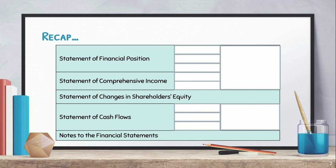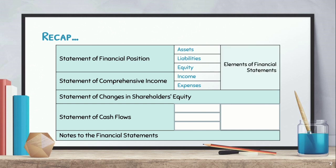Aside from that, we also discussed the elements of financial statements. We have assets, liabilities, and equity, which can be found in the statement of financial position, and income and expenses, which we can find in the statement of comprehensive income. These five — assets, liabilities, equity, income, and expenses — are called elements of financial statements. We also have operating, investing, and financing activities, which can be found in the statement of cash flows.